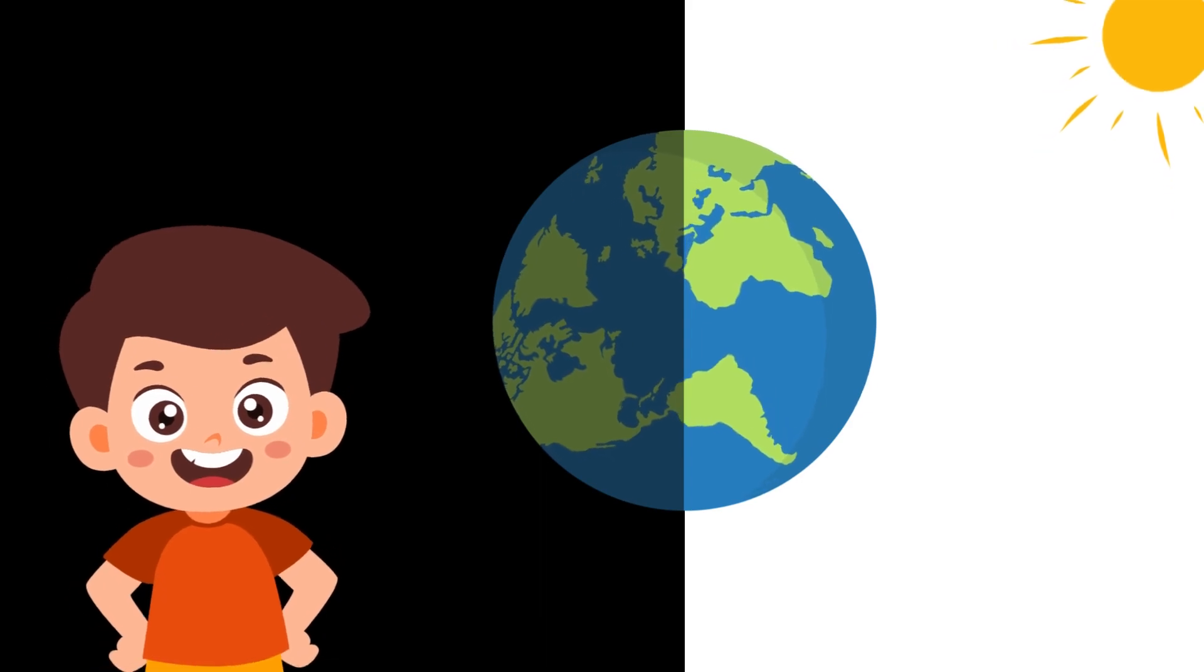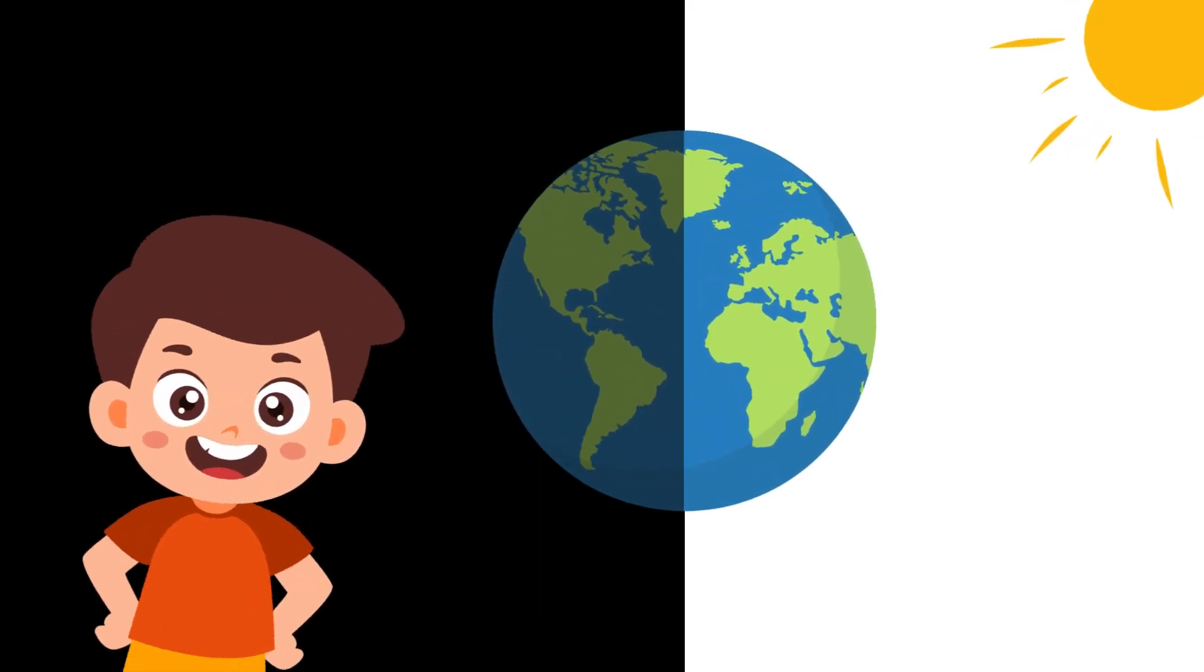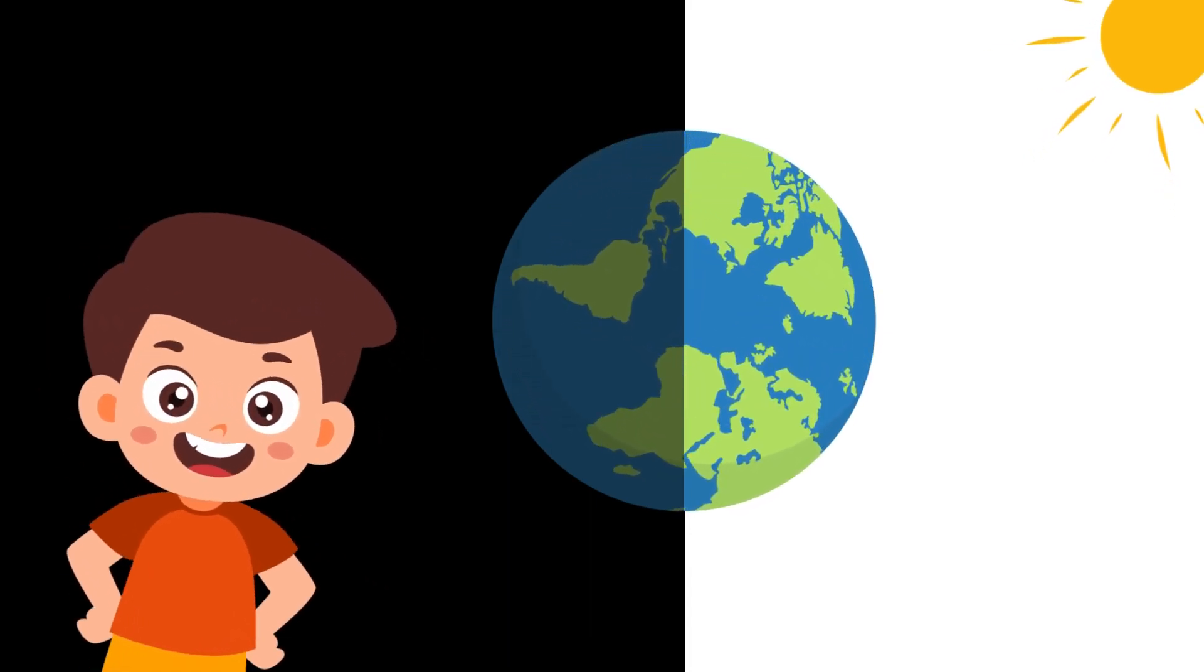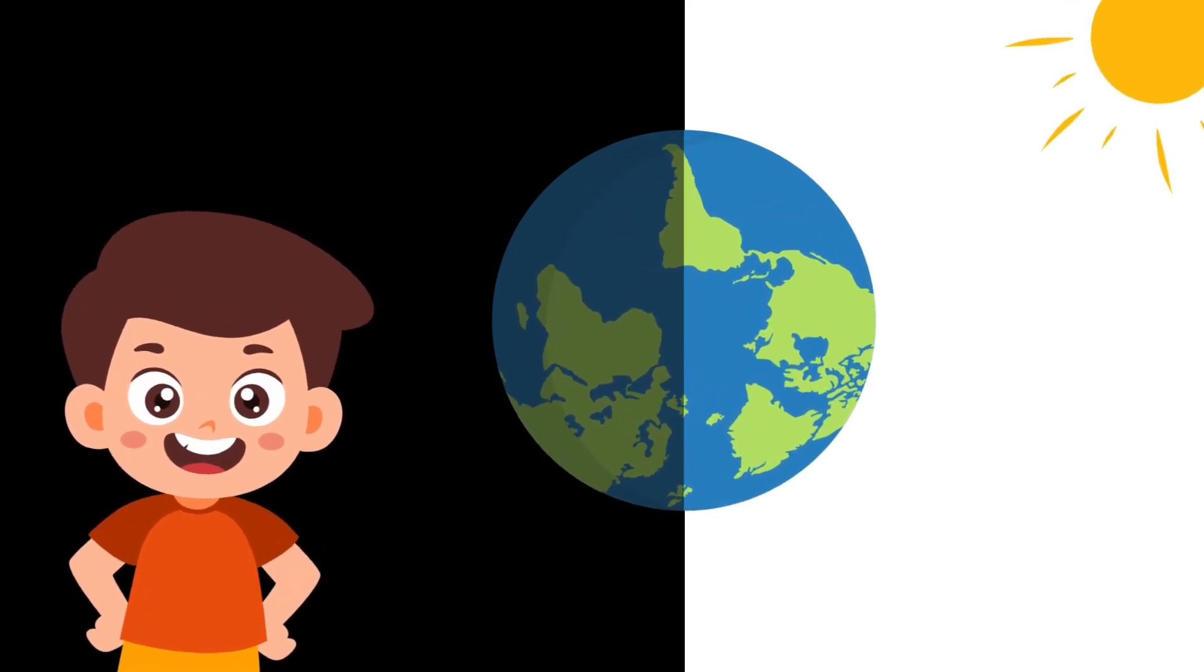Sunrise and Daytime. When your part of Earth faces the Sun, it's like a grand entrance to a bright and sunny day. This is called sunrise, and it marks the beginning of daytime. The Sun's rays touch everything, making it feel warm and lively.